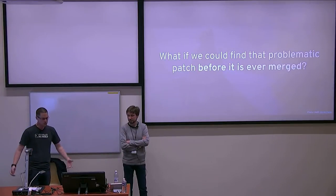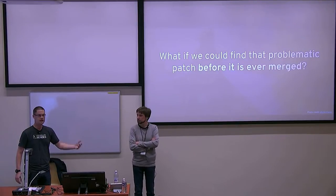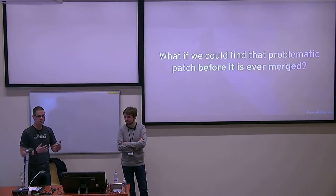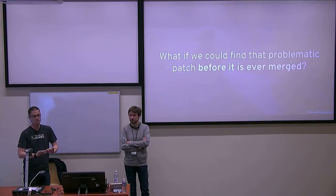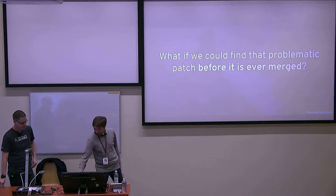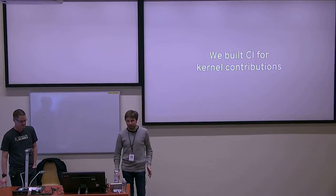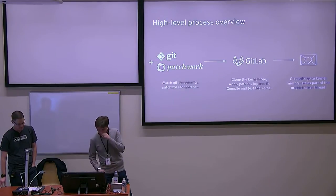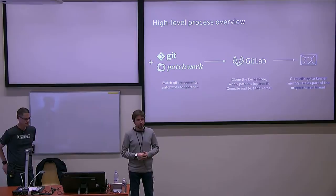The question we asked ourselves was: what if we could find that patch before it ever made it in? That opens up questions of how do we look at these patches before they ever get merged into a tree, and how can we test them adequately enough to know if we found a problematic one? Naturally, we build the kernels. What we do is watch kernel mailing lists.